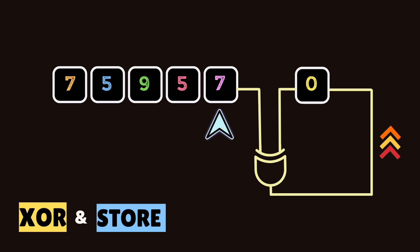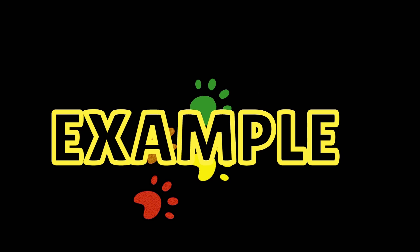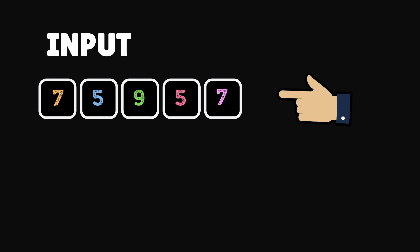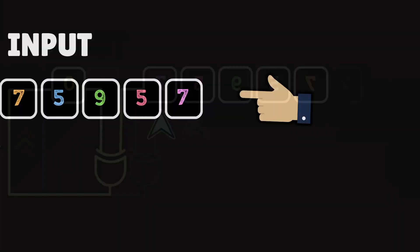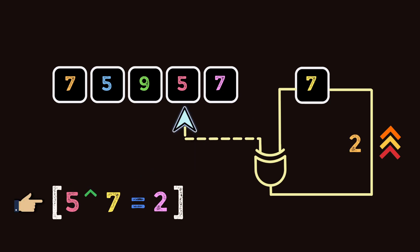Here's an example where you can understand the operation better. Here we have five elements: 7, 5, 9, 5, 7. Now we will perform XOR operation on it. 5 XOR 7 is 2, and 2 XOR 9 is 11. 11 XOR 5 is 14, and 14 XOR 7 is 9.